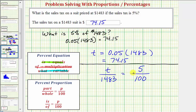We can also set this up using keywords for this ratio here. Here we use the words is over of, and because our question says what is, the unknown or tax amount goes in the numerator. And because it says of 1,483, 1,483 is in the denominator of this ratio.